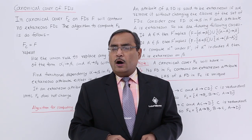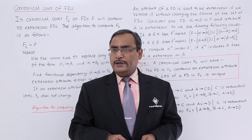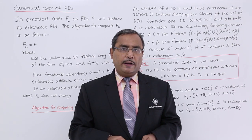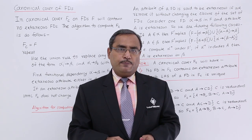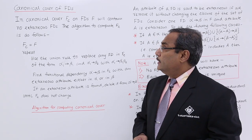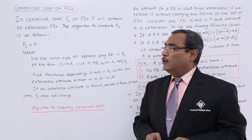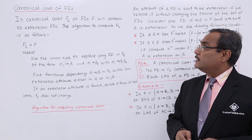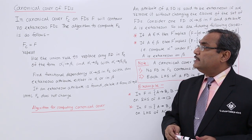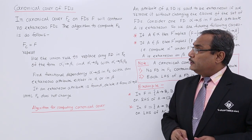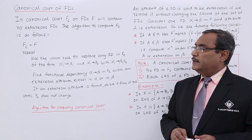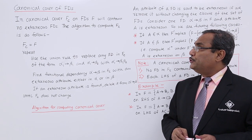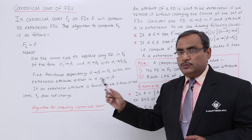We are going to discuss how we can calculate the canonical cover of functional dependencies. This topic is very important. In canonical cover, it will be denoted by fc — c will come in the suffix. Functional dependencies in F will contain no extraneous functional dependencies. This algorithm to compute fc is as follows.